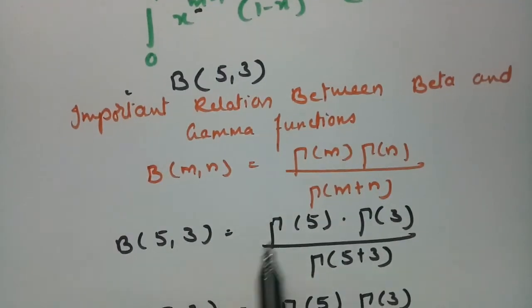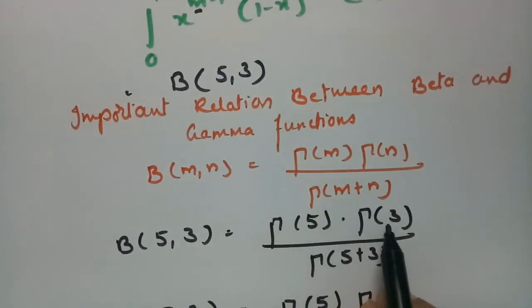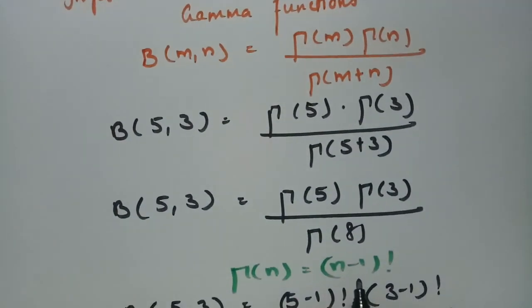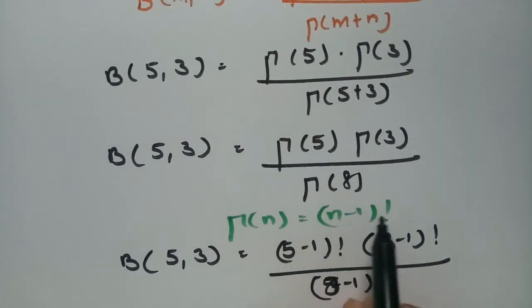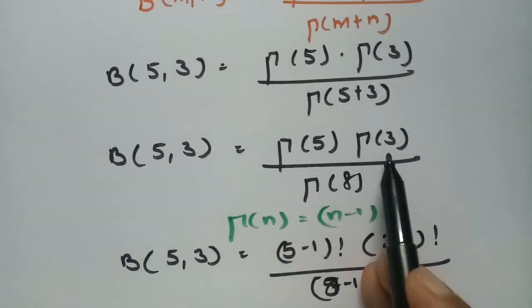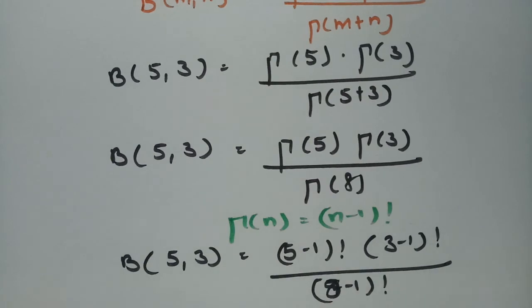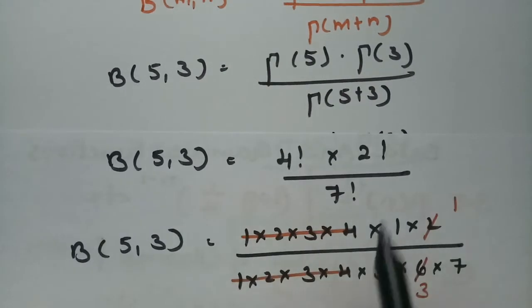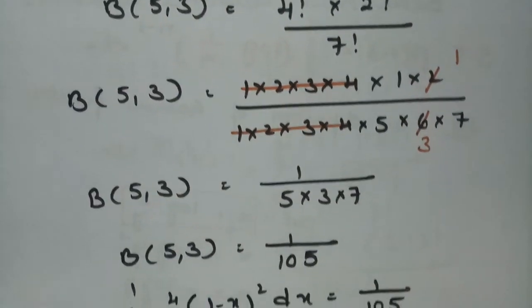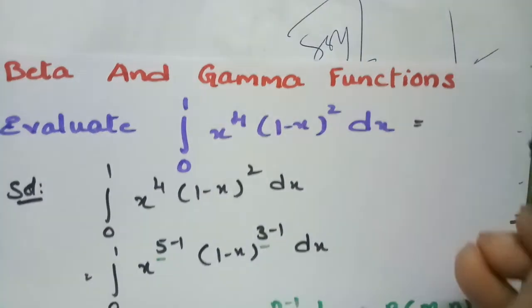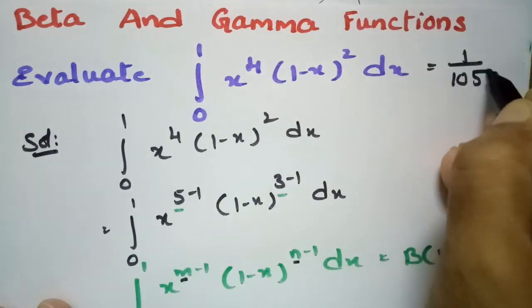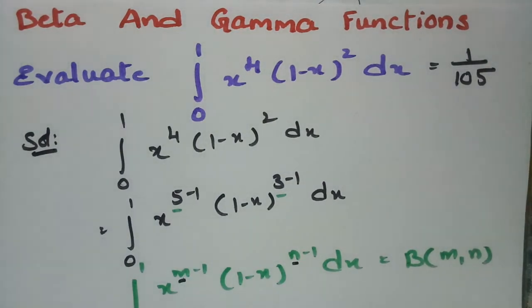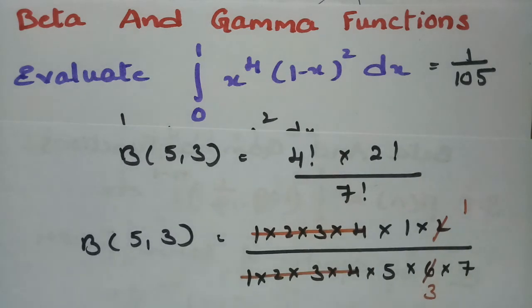Using the relation beta(m, n) = gamma(m) gamma(n) / gamma(m+n), with m=5 and n=3, we get gamma(5) gamma(3) / gamma(8). Using gamma(n) = (n-1)!, this becomes 4! into 2! by 7!, and after simplifying we get the answer as 1 over 105. Therefore the integral from 0 to 1 of x^4 (1 minus x)^2 dx equals 1/105. This is simple using these small properties.